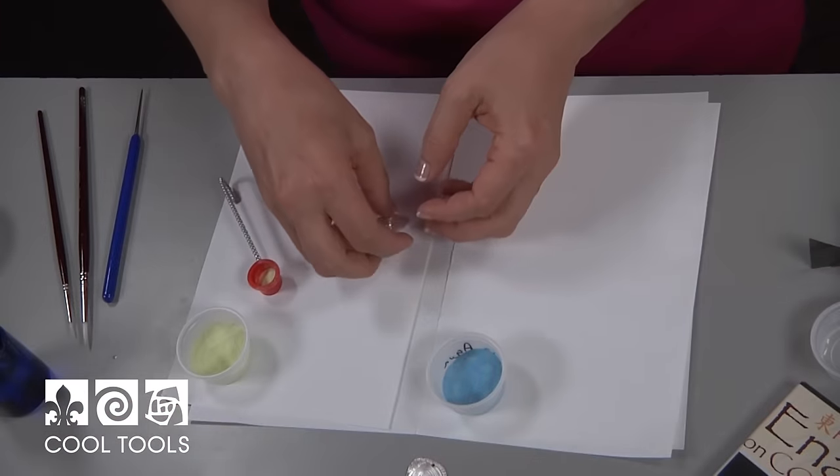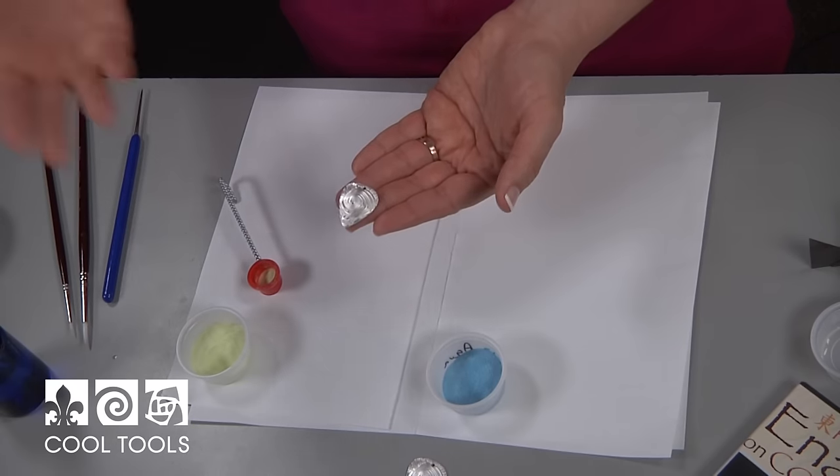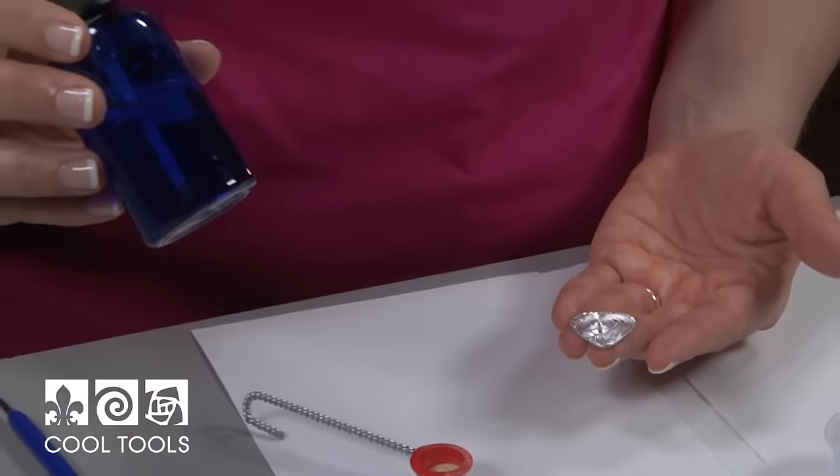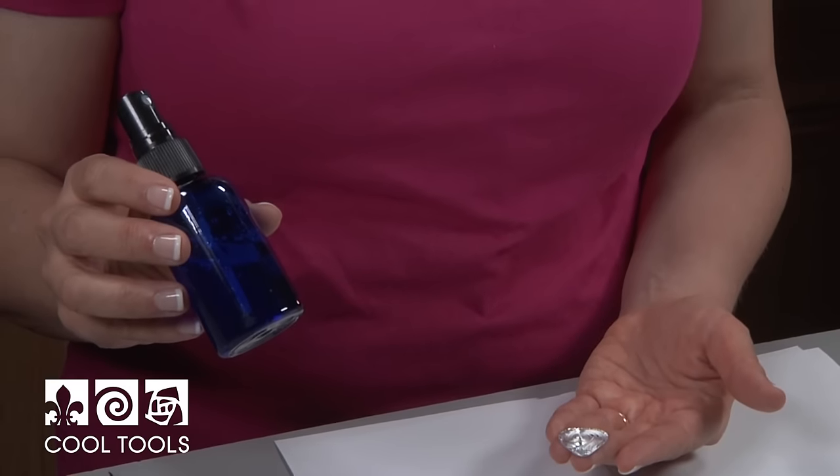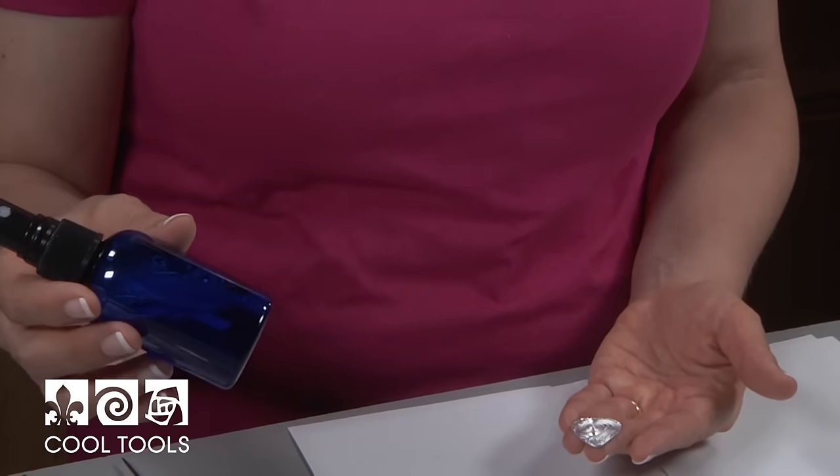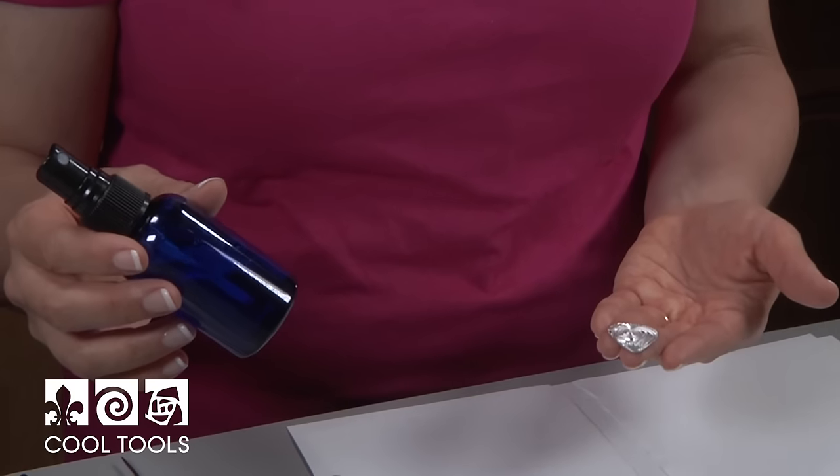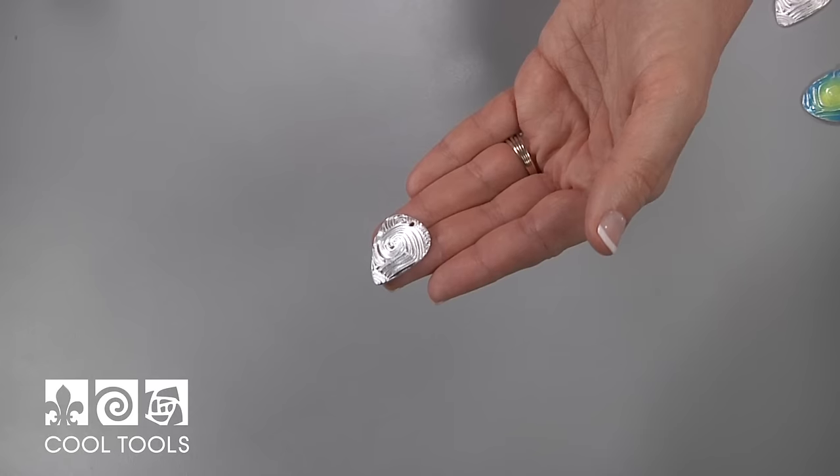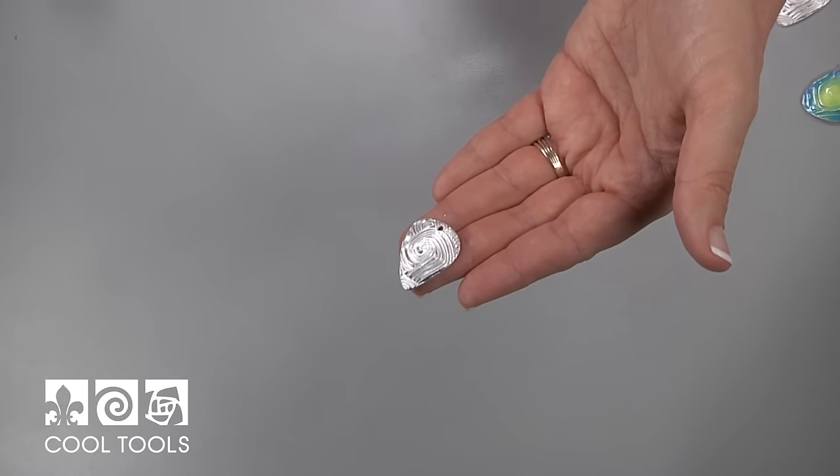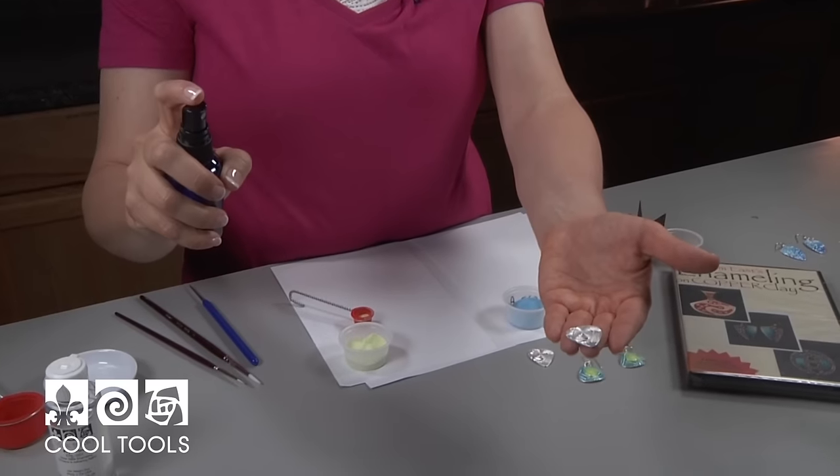Next up, I'm going to show you how to apply the enamel to the front of the piece. Before I can sift anything on it, I need to put some more clear fire on it. This time, I'm going to be using a 50-50 dilution, distilled water and clear fire that I've put into a sprayer. Don't spray directly on your piece. Spray a little above it and allow the mist to settle onto the piece.